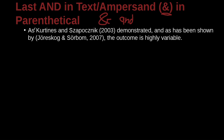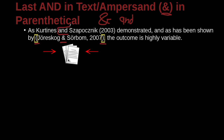Let's take a look at an example. As Curtin and Sposnik (2003) demonstrated, and as has been shown by Zhurnsk and Sorbim (2007), the outcome is highly variable. Here we have an ampersand and here we have an 'and.' What's the difference? The difference is the parentheses. When your citation is inside the parentheses, you must use the ampersand. When your citation is outside the parentheses, you must use 'and.'